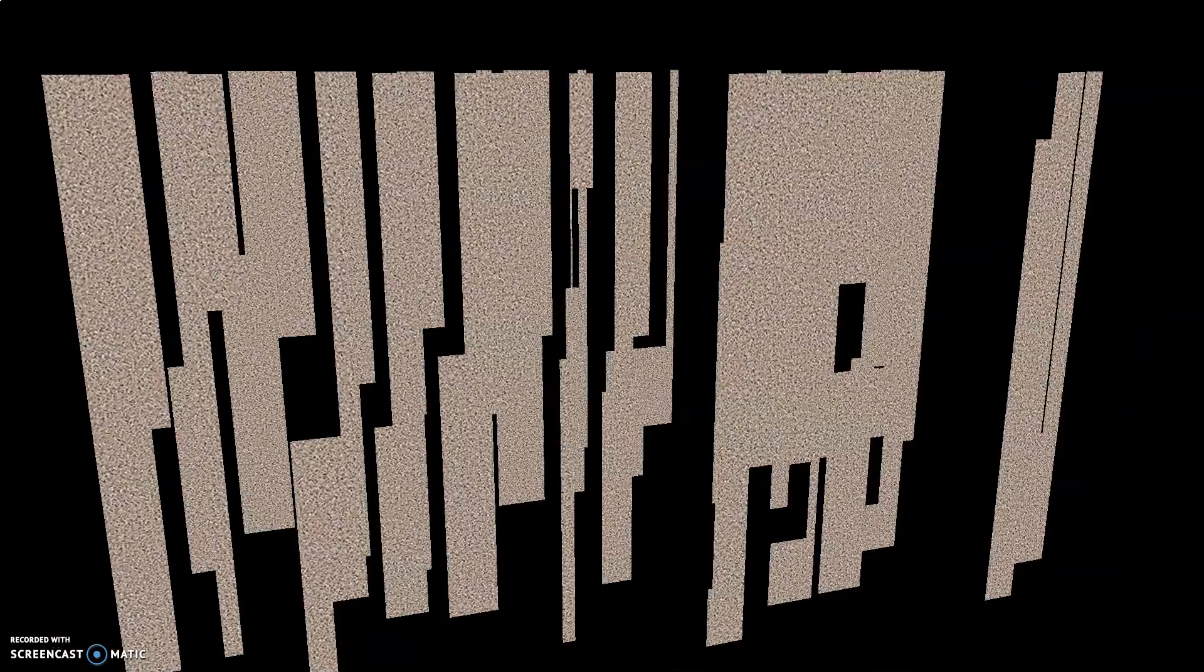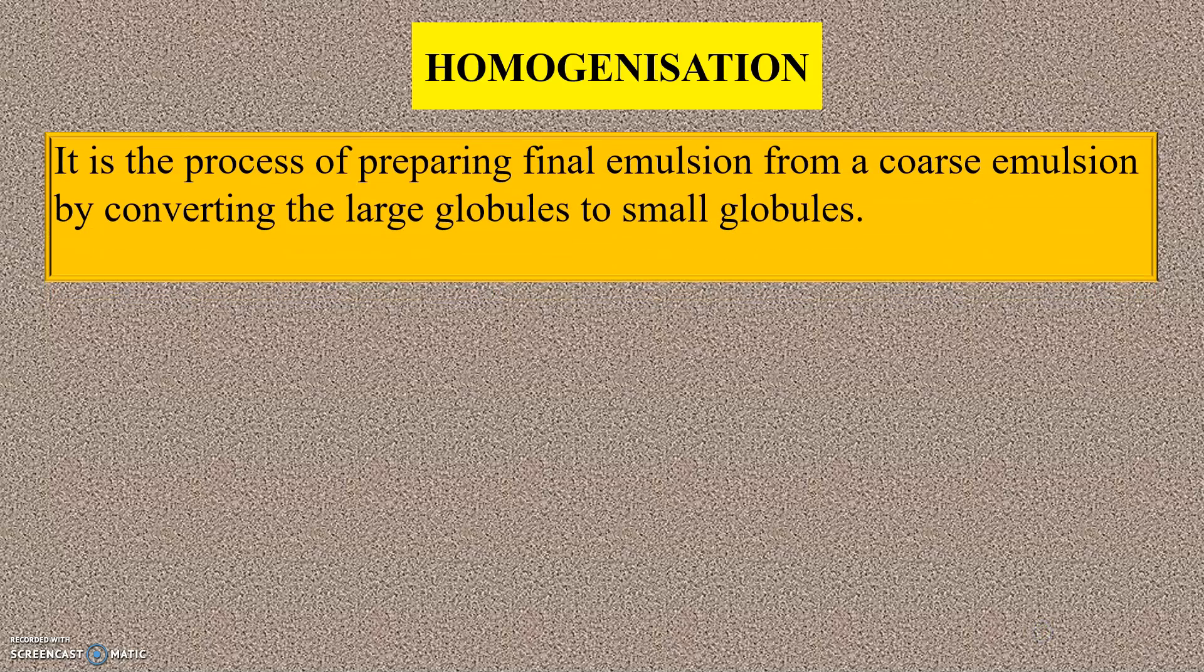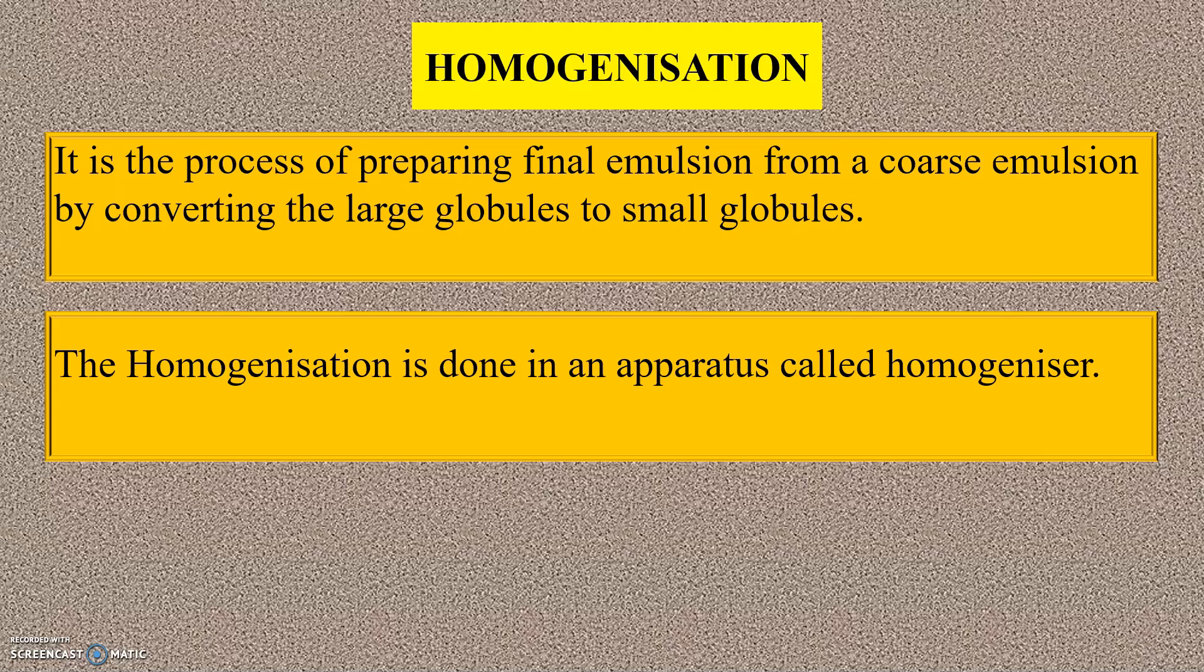Now let us start by knowing and studying what is homogenization. It is the process of preparing final emulsion from a coarse emulsion by converting the large globules to small globules. The homogenization is done in an apparatus called homogenizer.